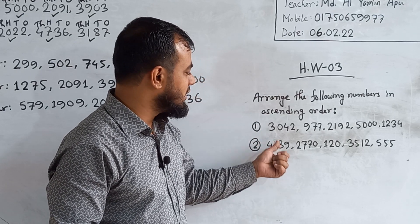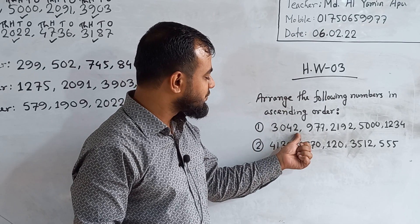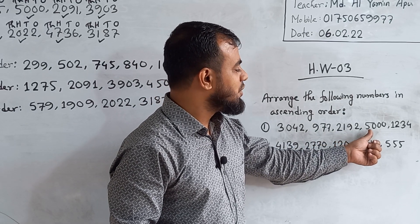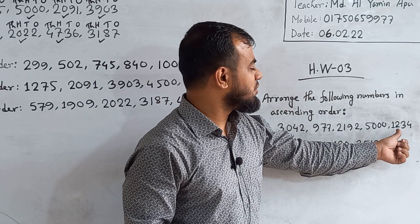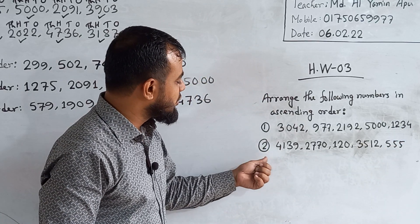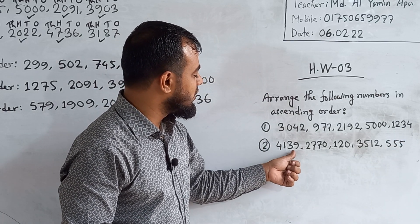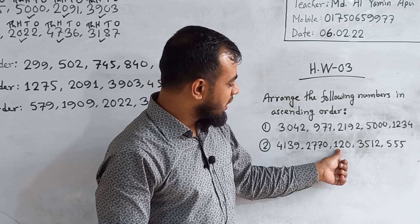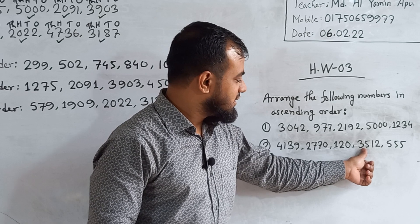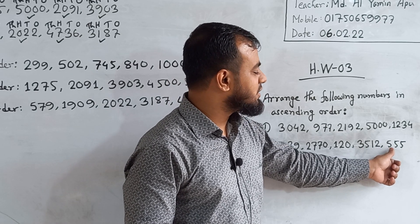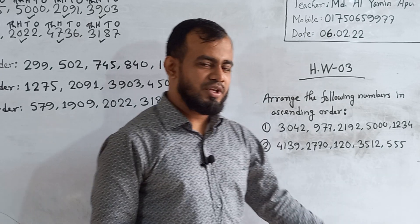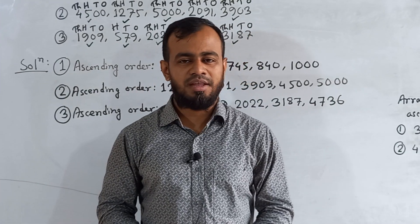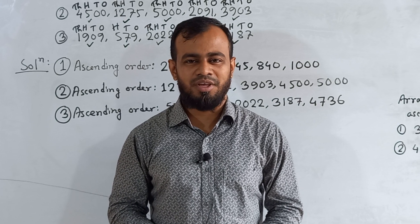The homework numbers for question one are: 3042, 977, 2192, 5000, and 1234. For homework question two, the numbers are: 4139, 2770, 120, 3512, and 555. Please do your homework in your HW copy and submit it every Saturday from 9 a.m. to 3 p.m.